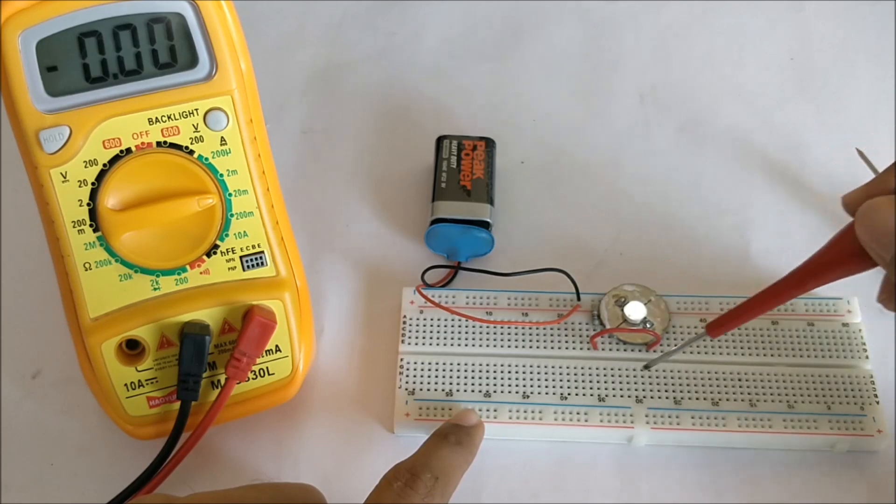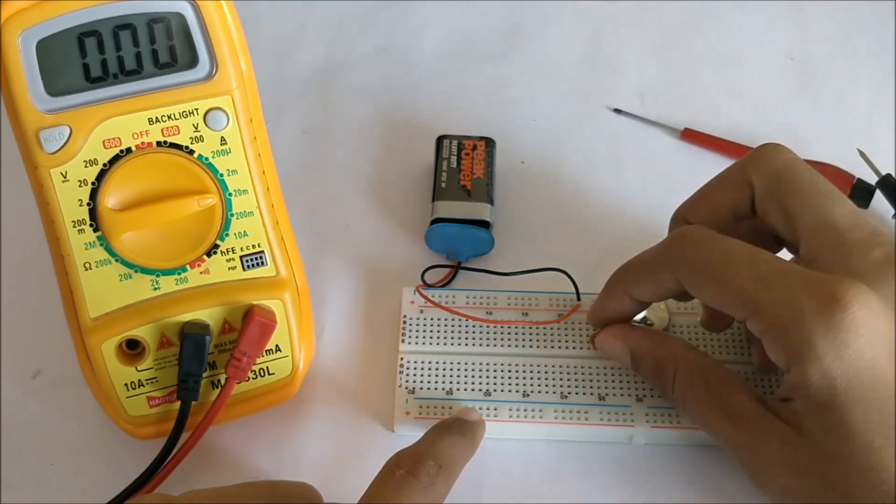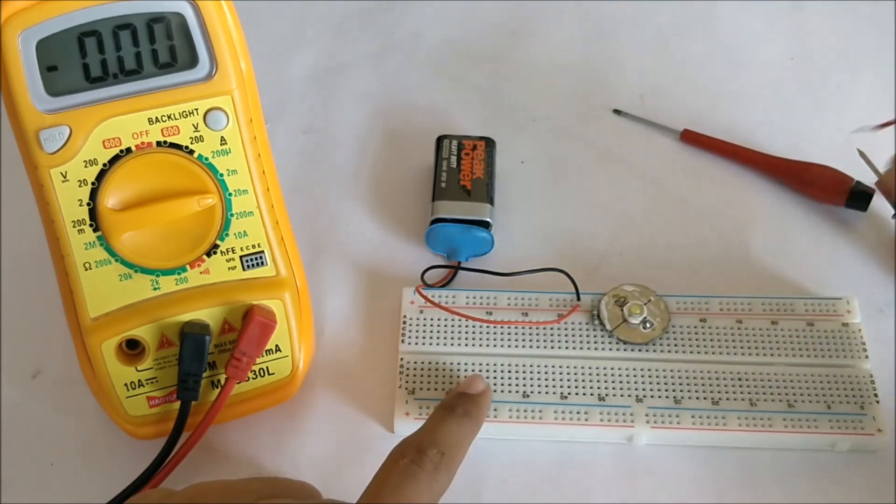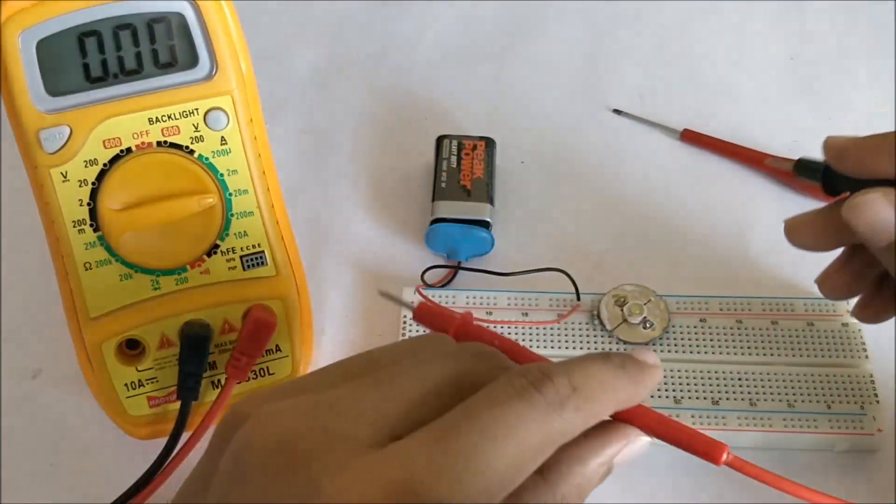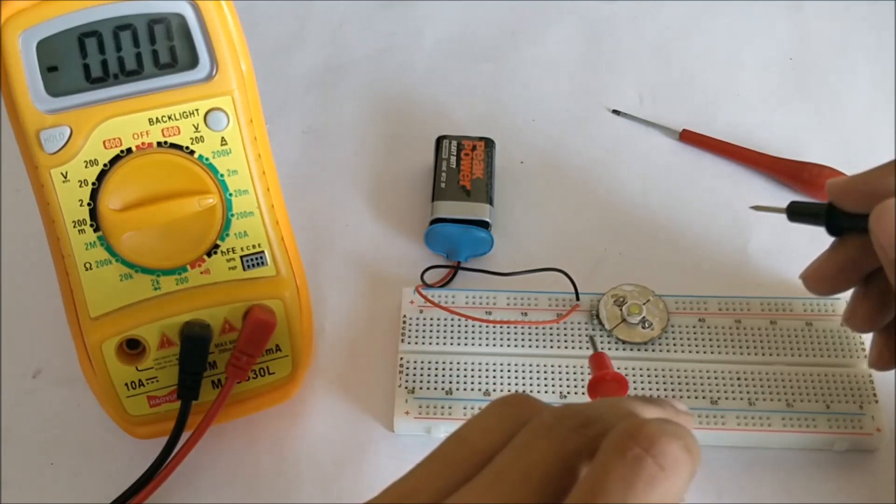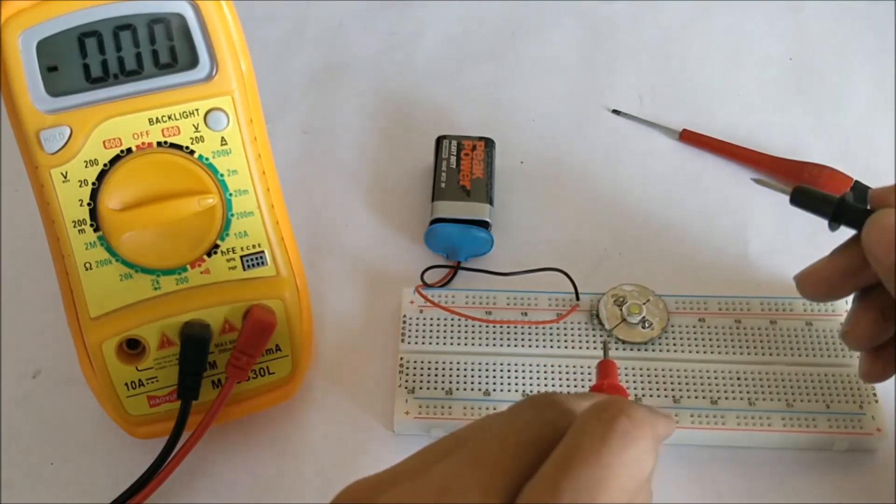We have to measure current in series. So this wire has to be replaced with the multimeter so that the multimeter is in series with the circuit. As always, current should be measured in series and voltage should be measured in parallel. So let us replace the wire with the multimeter.